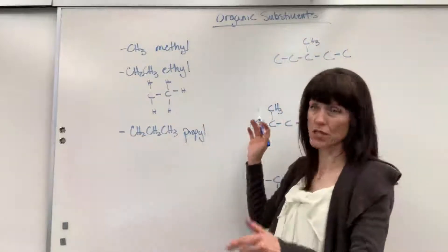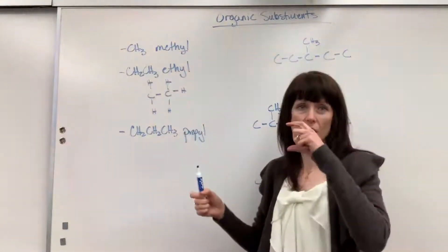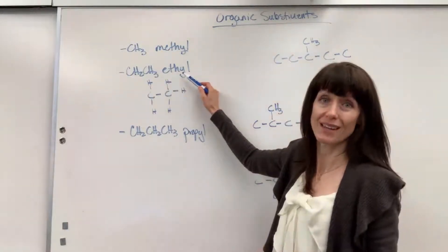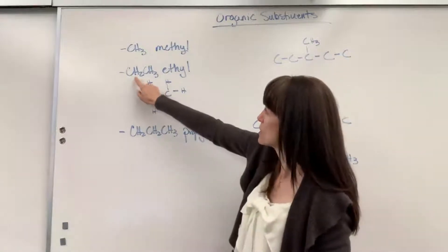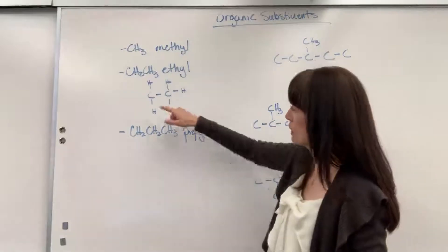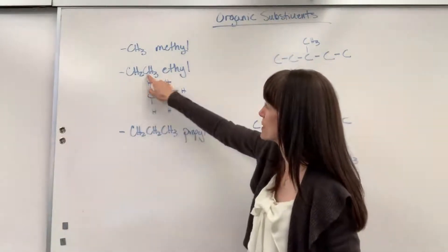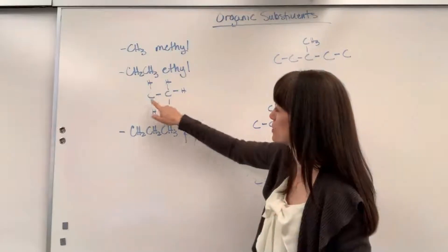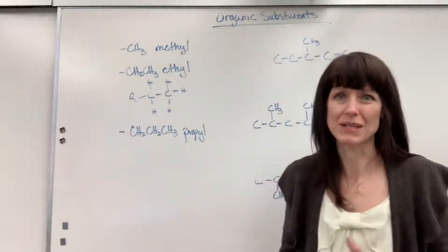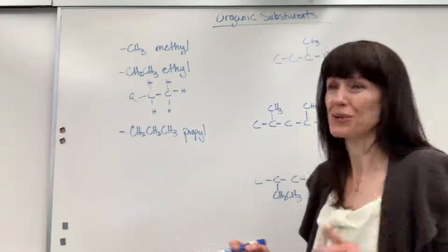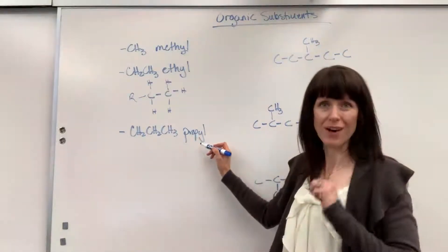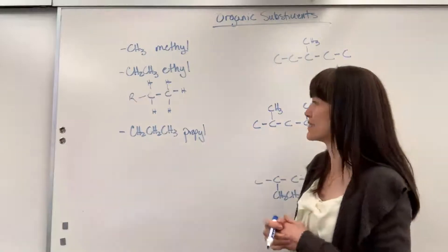On your really long carbon chain, if you have two carbons attached to it, two carbons is 'eth,' and it's a substituent, so that's called an ethyl group. And a propyl group — 'prop' means three carbons. It's a substituent, so it ends in 'yl.' So there's one, two, three carbons.